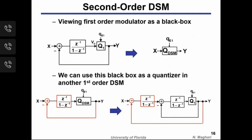Building a higher-order Delta-Sigma modulator is straightforward conceptually: a first-order modulator can be viewed as a black-box quantizer and embedded in another first-order loop, creating a second-order modulator. This can be extended to any order, though the integrator coefficients must be re-optimized — which is not the main focus of this talk.